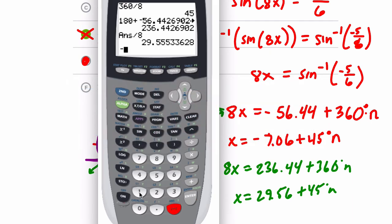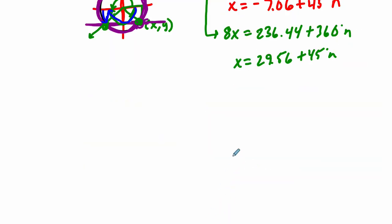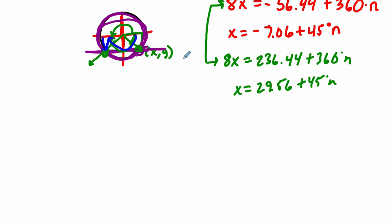So, negative 180 plus about 56.44, and that's negative 123.56. I want to divide that by 8, and I get negative 15.45 about. So, what I just did right there was I wrote this angle in another way. I just happened to look at it from a different perspective.